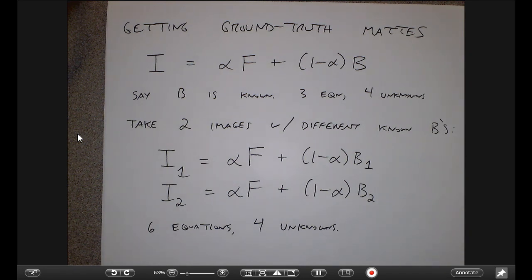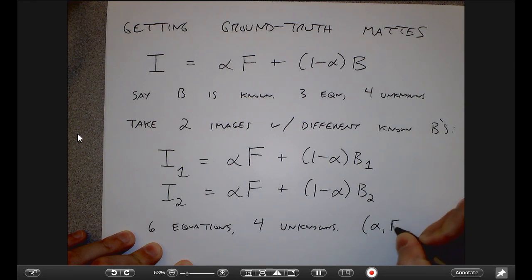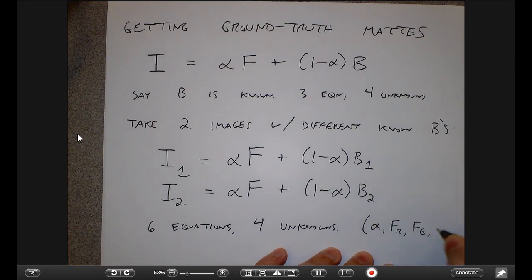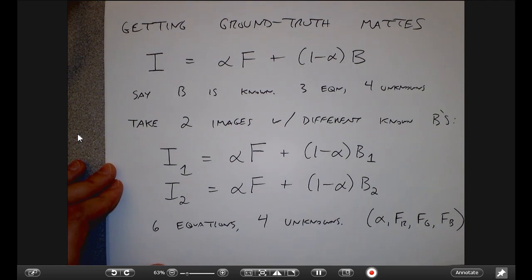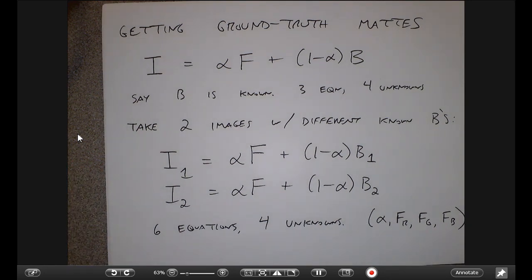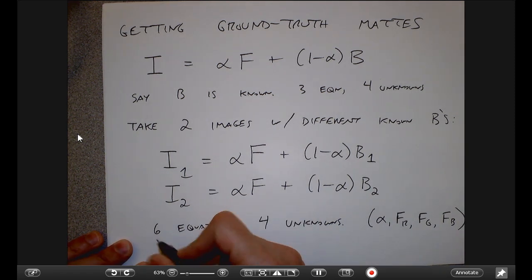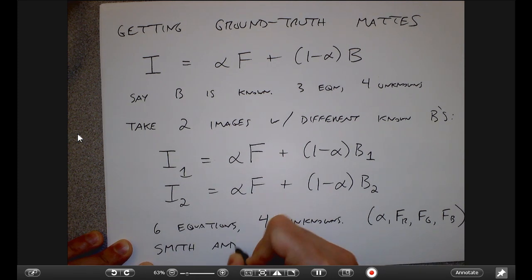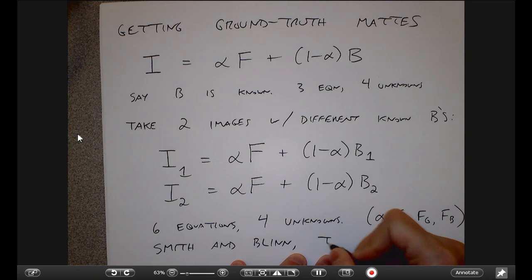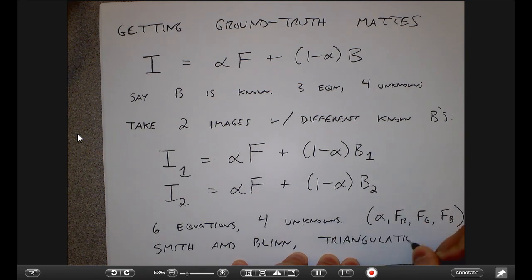This is under the assumption that changing the background doesn't change the alpha channel — which is reasonable because alpha is a property of the foreground, describing how fuzzy it is. This algorithm is called triangulation, from a really old and important paper. It's basically a linear algebra exercise to get equations for F and alpha given two images with different known backgrounds. This is also how alphamatting.com obtains their ground truth maps — not by having a grad student label pixel by pixel, but by taking very high quality images with multiple backgrounds.